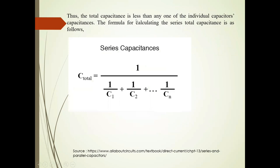The total capacitance is less than any one of the individual capacitors' capacitances. The formula for calculating the series total capacitance is: C total equals 1 over (1/C1 + 1/C2 + ... + 1/Cn).